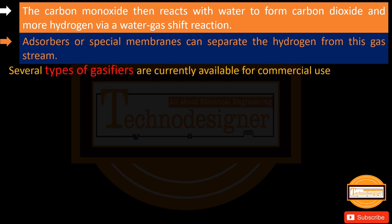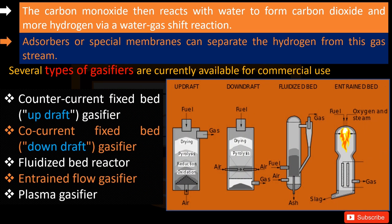Several types of gasifiers are currently available for commercial use. The countercurrent fixed bed gasifier, or updraft, is a fixed bed of carbonaceous fuel — for example coal or biomass — through which the gasification agent like steam, oxygen, and air flows in countercurrent configuration. The ash is either removed in dry condition or as a slag.